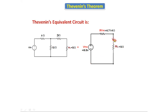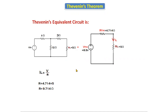Now we find the load current IL using Ohm's law: IL = V/R. Total resistance R = RTH + RL = 4.714 + 5 = 9.714 ohms. Voltage = VTH = 8.5 volts. So IL = 8.5 / 9.714 = 0.875 amperes.